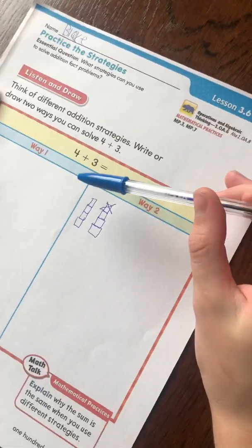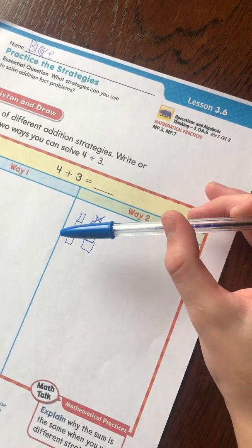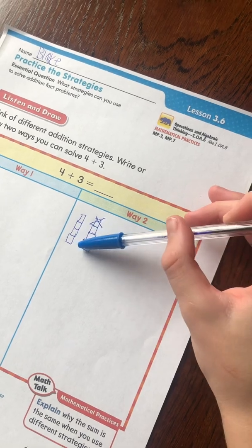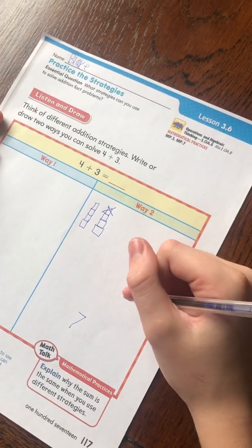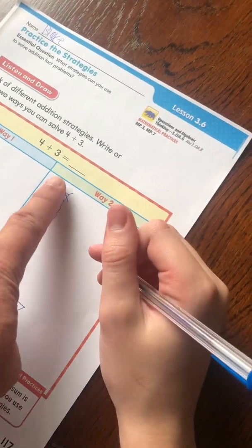And that would make it 1, 2, 3, 4, 5, 6, 7. All right, let's write the number there. And we need to put our answer right there.